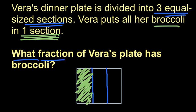And then look at this picture and ask ourselves what fraction of Vera's plate has broccoli. Well, our fraction's going to have a numerator, on top will be how many sections have broccoli, which is one.